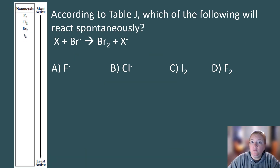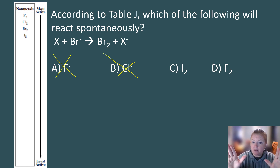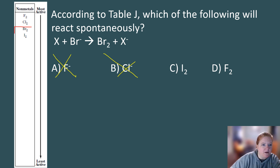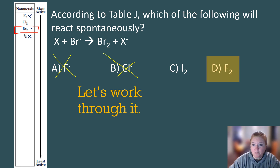According to Table J, which will react spontaneously? We can see Br⁻ has a negative charge. We can immediately cross out any choice that pairs an ion with an ion or a neutral metal with an ion — it must be a neutral non-metal versus a non-metal ion. Finding Br on the non-metal side, we compare it to I₂ and F₂. Since Br⁻ is the ion that's combined, we need something above it to kick it out and take its place. That would be F₂, which is above Br on the table.